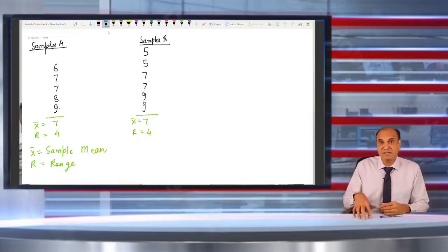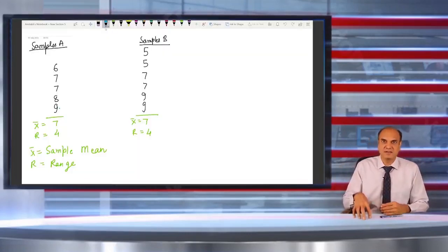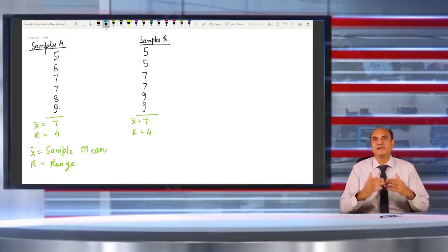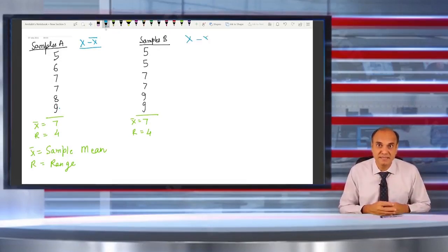Same thing if I express mathematically: I calculate the distance of each data point in my vendor sample and subtract the mean from each of the data point. So first one is 5 minus 7, that is minus 2.